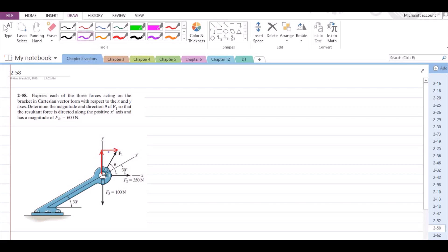This angle right here is also theta because it is alternate to that angle right here. So F1 in terms of Cartesian vector form can be written as F1 cos theta i component plus F1 sin theta j component.